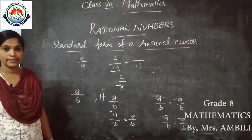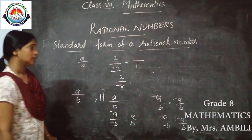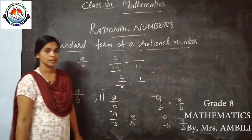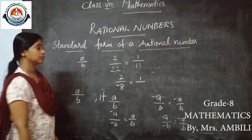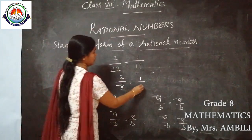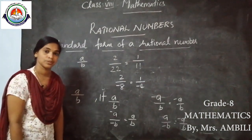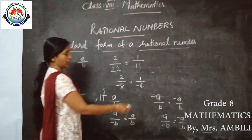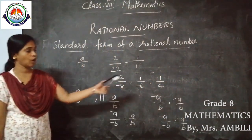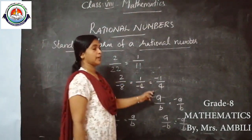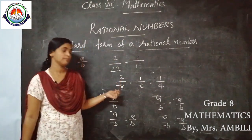Another example: 2/(−8). What is the lowest form? Divide both by 2: numerator becomes 1, denominator becomes −4. So we get 1/(−4), which we write as −1/4. Now the denominator is positive, therefore −1/4 is the standard form of 2/(−8).